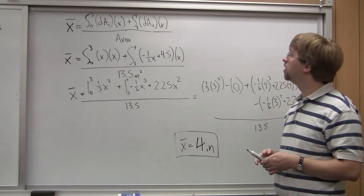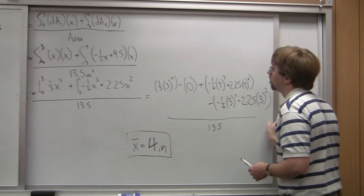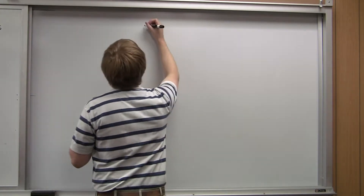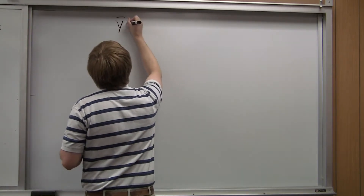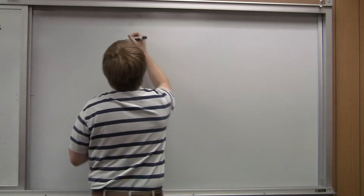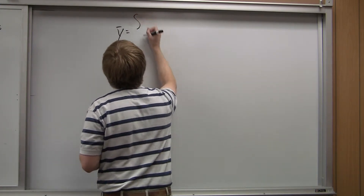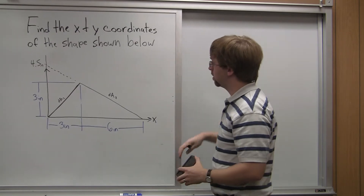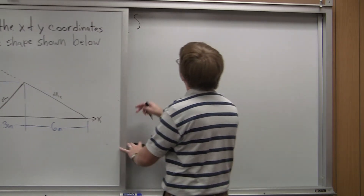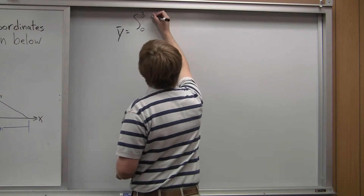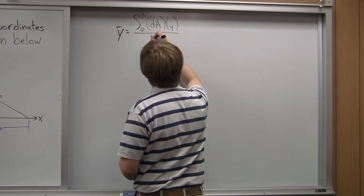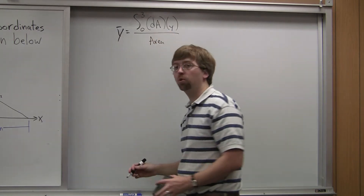So that's the x-coordinate of my centroid. Now let's move on and look at the y-coordinate. Y-bar is going to be equal to the integral from y-min to y-max. Looking back at my triangle, y-min is 0 and I go up to 3 inches, so 0 to 3, times dA, times y, over the area. The area again is 13.5 square inches.